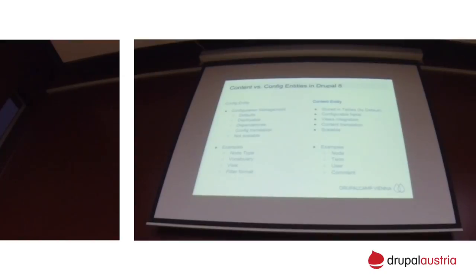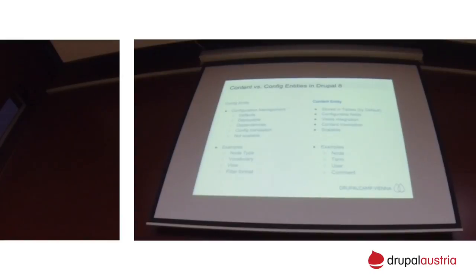One important thing is that config entities don't scale well — they are all stored in a single table and exported into the same folder, so if you're going to have hundreds of those you might run into problems. On the other side, you have content entities. They're stored by default in the database tables — that's configurable and overridable, you can use MongoDB or something else. They can have configurable fields that you can add in the interface like you know from Drupal 7, they can have revisions, there's default views integration, and unlike config, they're scalable — you can have hundreds of thousands of content entities.